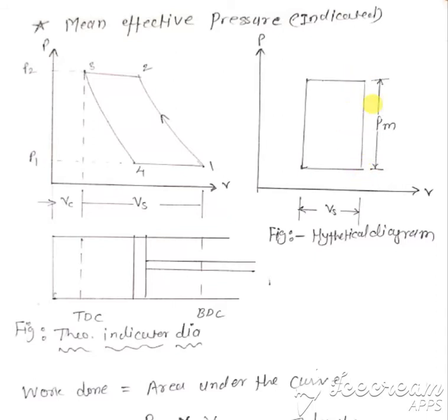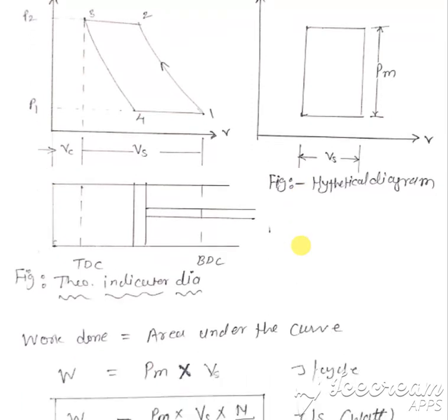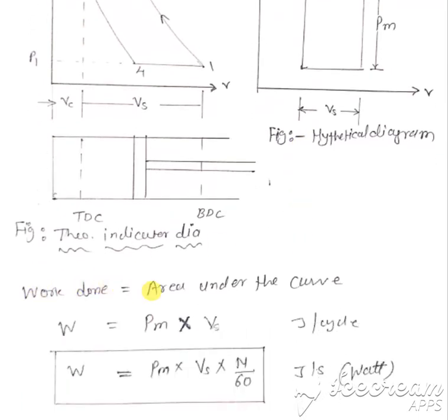Then this represents the mean effective pressure and this represents the swept volume. Now, area under the curve is the work done we know. Therefore, work done is equal to area under the curve, W equals PM times VS.